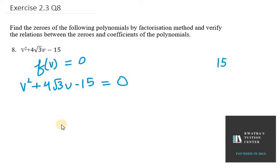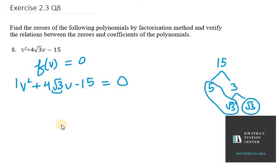Now we need to split the middle term. Here c is 15 and a is 1. Taking factors of 15, we can write them as 5 and 3. Since we have √3 in the middle term, the factors become 5√3 and √3. Note that 5√3 minus √3 makes 4√3.